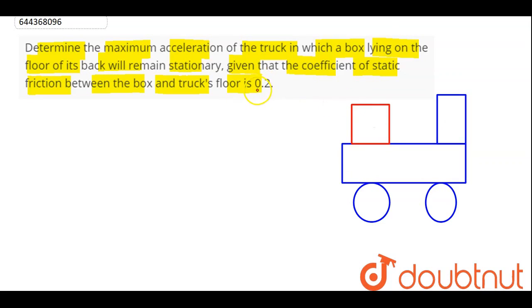Now, here, coefficient of friction is given as 0.2. So, we are being asked maximum acceleration of this truck. So, we can say here, the acceleration of this box will also be A. So, here, if mass of this box is M, pseudoforce on it will be M A backwards.